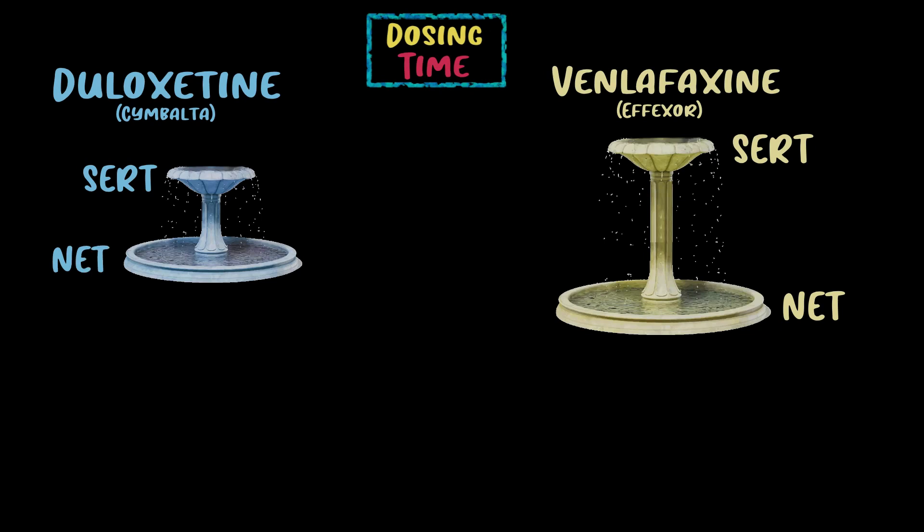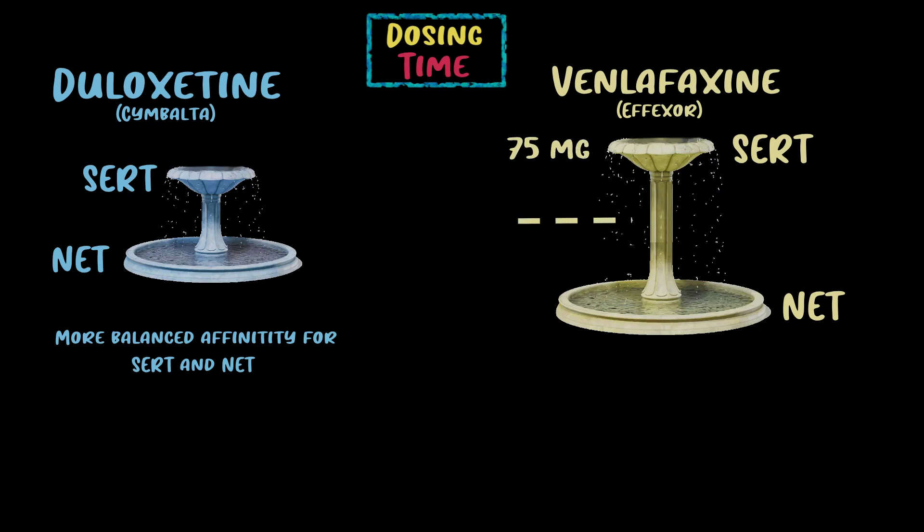Duloxetine, or Cymbalta, has a more balanced affinity for both the serotonin and norepinephrine transporters. I'm showing this by making the Effexor fountain a little longer, which doesn't perfectly fit the metaphor, but a more fitting analogy would be that Cymbalta has more flow from the first receptor to the second before it gets filled — like if it had more holes in the top tier. For Effexor, level one is maxed out at about 75 milligrams.